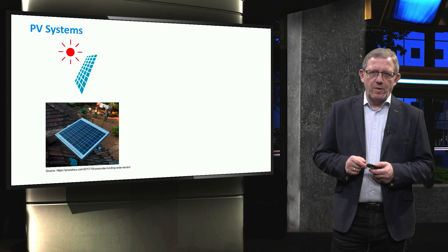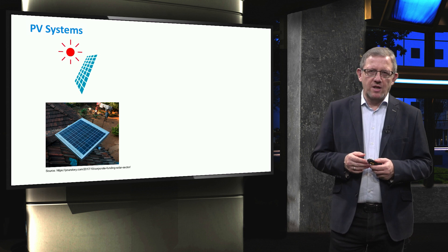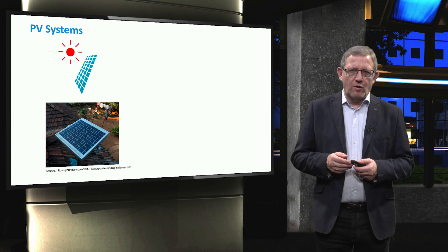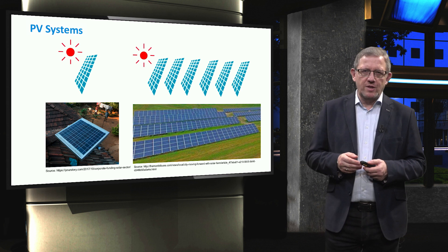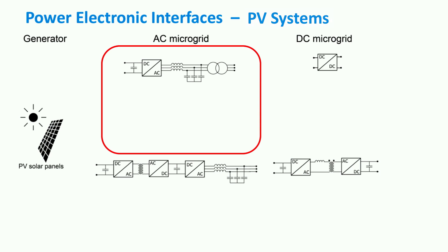The first component for which we introduce its power electronic interface will be photovoltaic systems. As shown in the slide, at a smaller scale at low voltage level, rooftop PV systems have many applications like off-grid remote voltages. For these low-voltage applications, typically one single converter may adequately step up the voltage in one stage. However, for medium-scale PV system farms up to a few megawatts connected to medium voltage levels, the DC voltage might be stepped up in a number of conversion stages using more complex converter topologies and AC transformers.